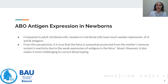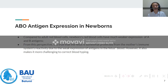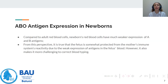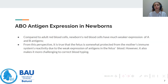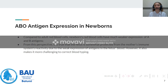Now some specificities of antigen expression in newborns. Comparing antigen expression between newborns and adults, newborn red blood cells have a much weaker expression of the A and B antigens. This is explained as the fetus being somehow protected from the mother's immune system reactivity. Antibodies produced by the maternal circulation can cross the placenta and enter the fetal circulation. A weaker expression of the A and B antigens protects the fetus from immune system reactivity during fetal life.